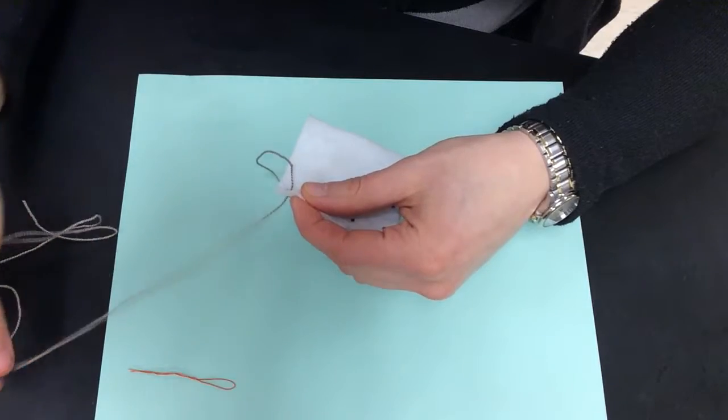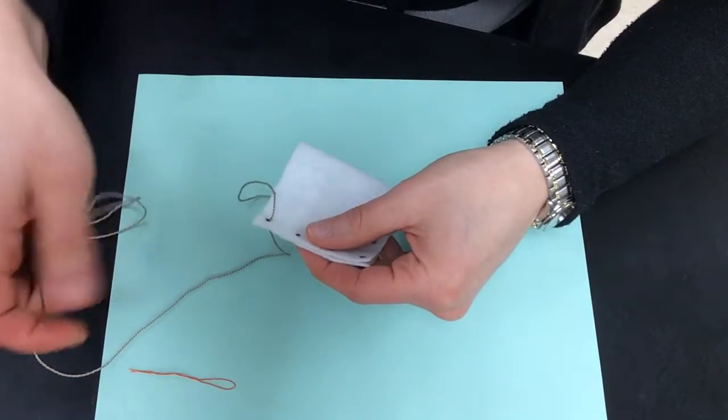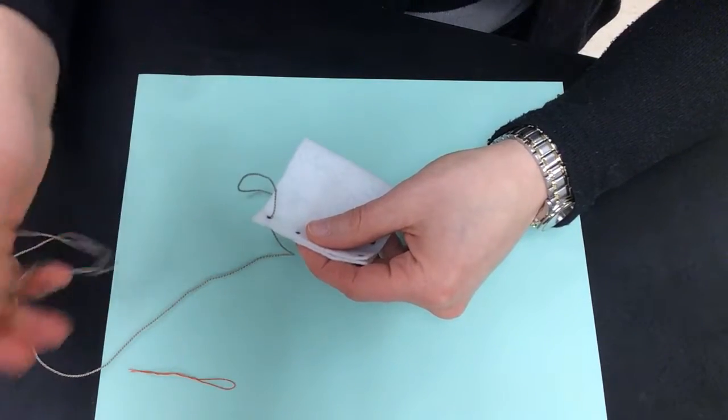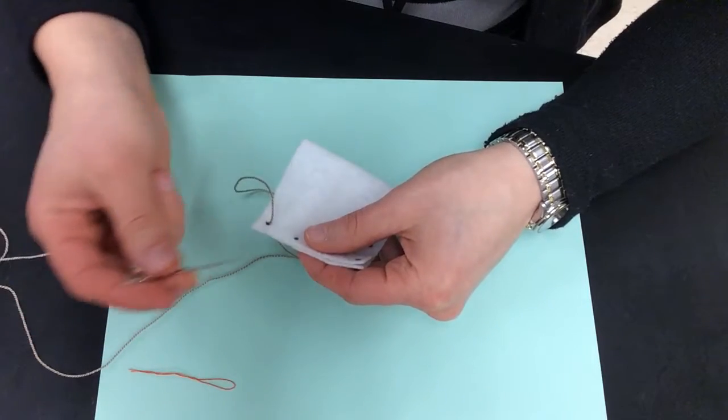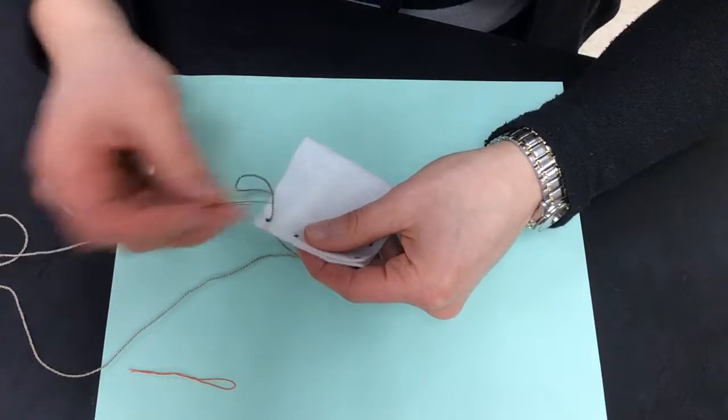So what we're going to do today is we're going to learn something called a whipstitch. This is a very easy, basic stitch. If you know another type of stitching, you can do that. But this one is very easy.